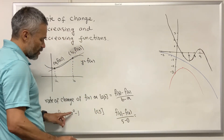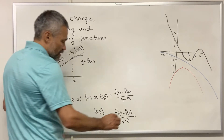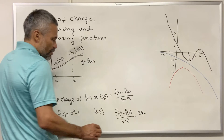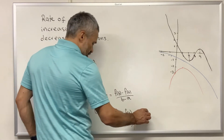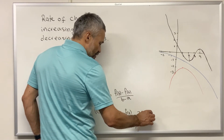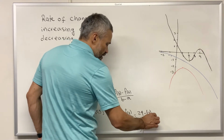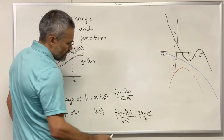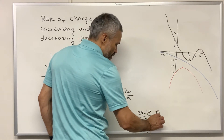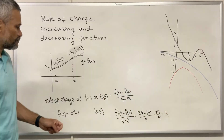f(5) is five squared, twenty-five minus one, which is 24. f(0) is negative one. So we have 24 minus negative one over five, which gives us 25 over five.